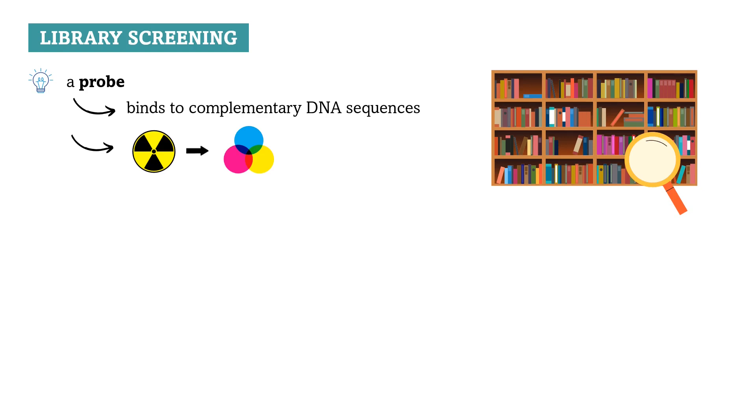Another method that is used for screening DNA libraries is finding the protein product of the gene we are interested in. The DNA library is cloned in an expression vector, a vector that ensures that the protein product of the cloned gene is produced. The clones are then tested for the presence of the protein product by using different chemical tests.